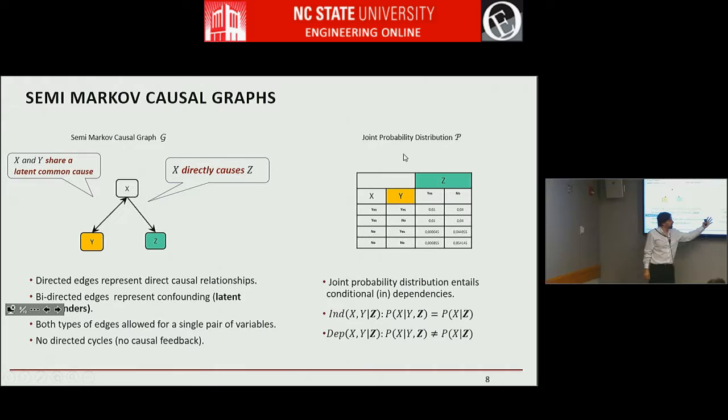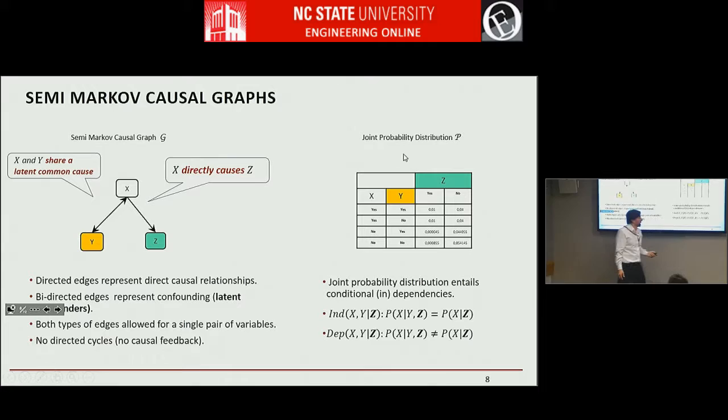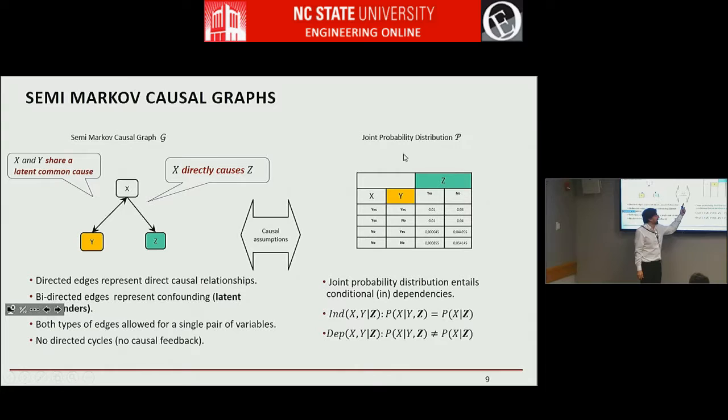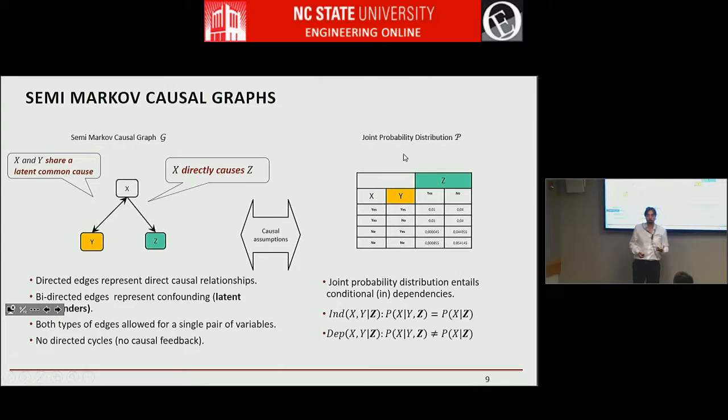What connects the causal model to the data are assumptions about what we mean by the nature of causality — the causal assumptions that we're going to use. Given a graph, the causal assumptions constrain the probabilities that we're going to see. These constraints are expressed in the form of dependencies, conditional dependencies, and independencies.